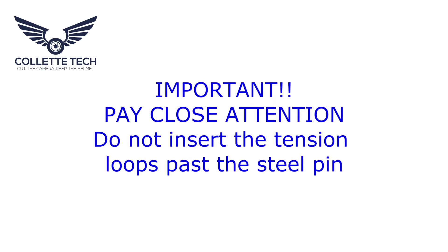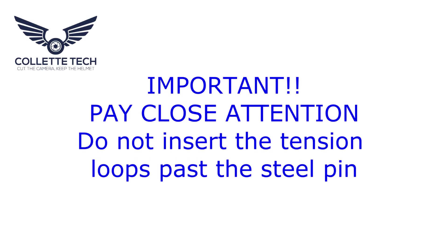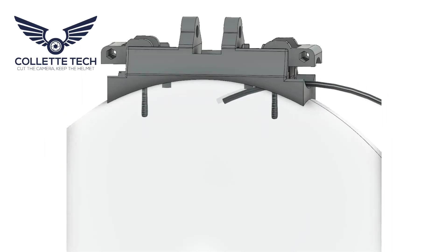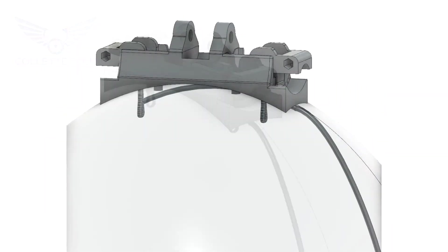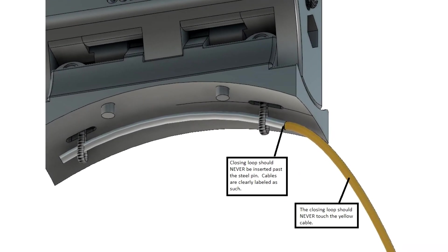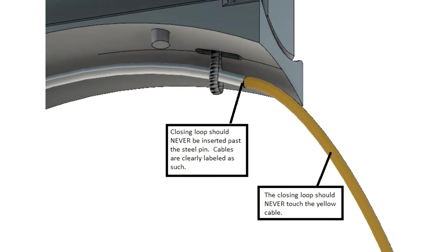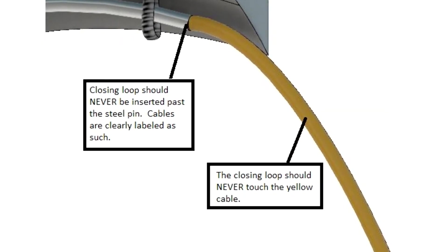You're almost done, but the next step is important, so pay close attention to the position of the pin relative to the tension loop. Insert the pin through both loops. It is important that the pin is not inserted past the first loop. The pin is also clearly labeled that it should not be inserted past the steel pin at any point.